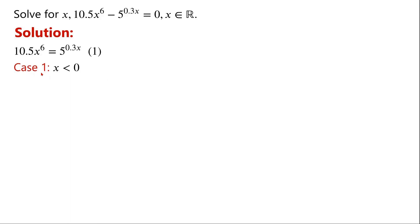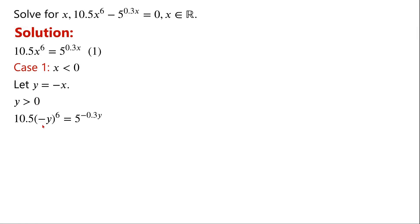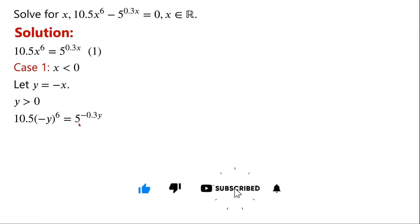Case 1: if x is less than 0, let y equal minus x, then y is greater than 0. So now, equation 1 can be written as 10.5 times minus y, all to the power of 6, equals 5 to the power of minus 0.3y.